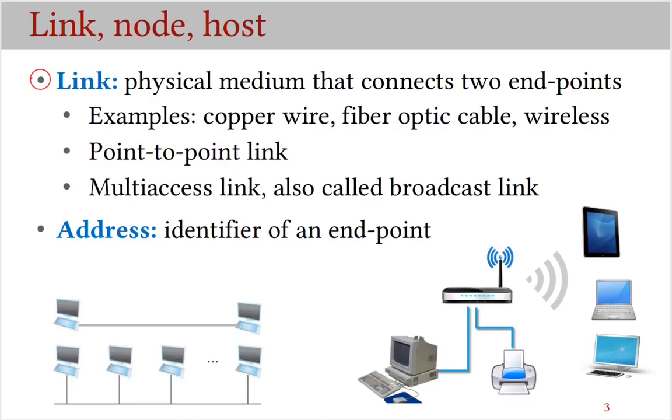Link is a physical medium that connects two endpoints. Examples of link are copper wire, fiber optic cable, and wireless links. A link that connects exactly two endpoints is called point-to-point link, and links that can be shared by more than two endpoints are called multi-access link. These links are also called broadcast link.